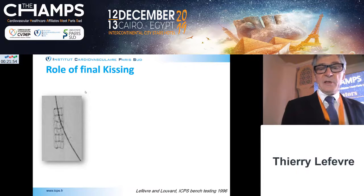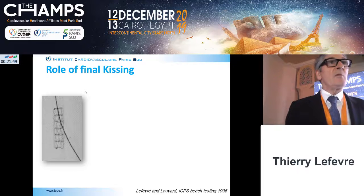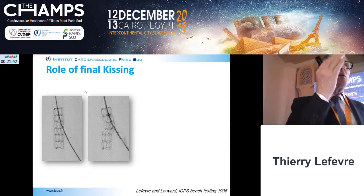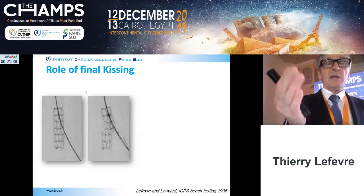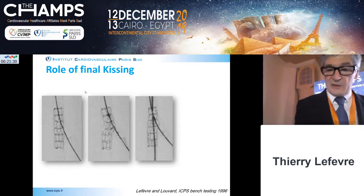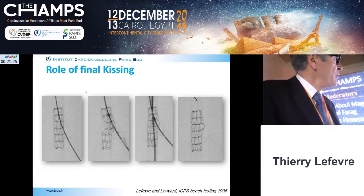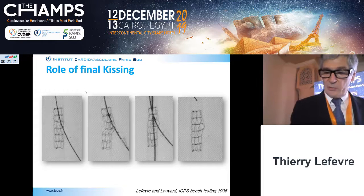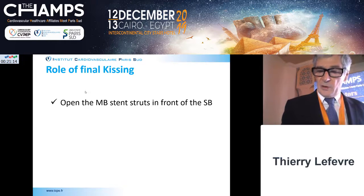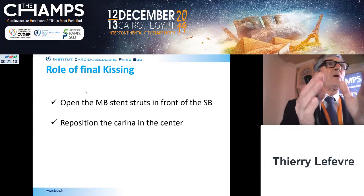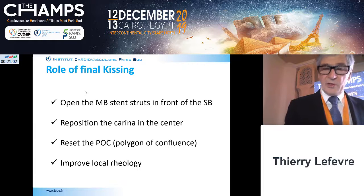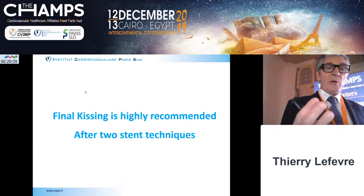Regarding final kissing balloon inflation: this was discovered during bench testing, when it was realized that opening the strut causes deformation of the main branch stent. Kissing corrects that deformation. Going through a distal strut gives nice scaffolding of the side branch ostium. The role of kissing is not only to open the main branch stent strut toward the side branch, but also to reposition the carina for optimal rheology in both branches, reset the polygon of confluence, and improve local rheology. It is highly recommended after two-stent techniques.